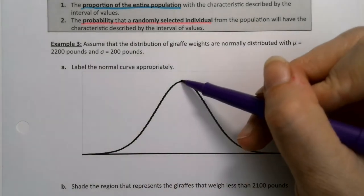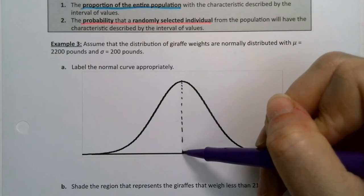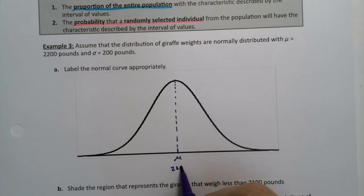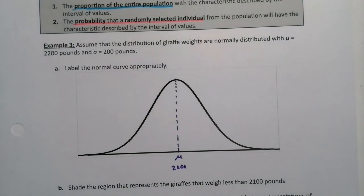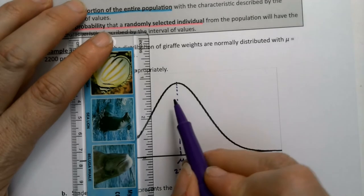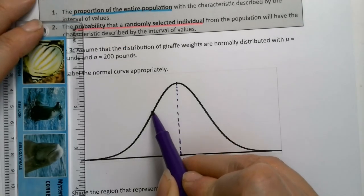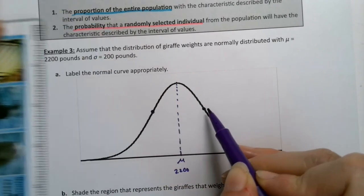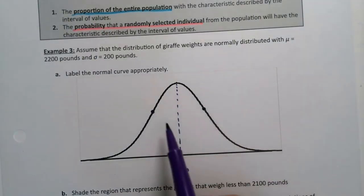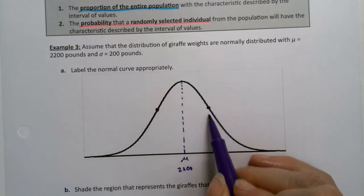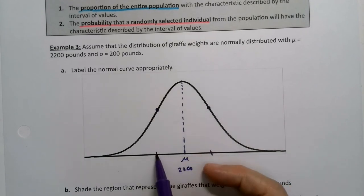We're going to label the normal curve. If we remind ourselves of all the things we've learned, the center is 2,200. The inflection points happen just a little bit above halfway — halfway would be right there, go a little bit above it and put your point, then match that point on the other side. You're eyeballing it, but you don't want it to be too skinny or too fat. You want them to be exactly the same height and exactly the same distance from the mean. That point will be one standard deviation away.